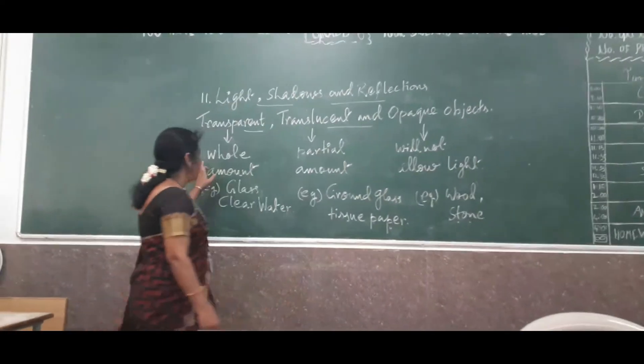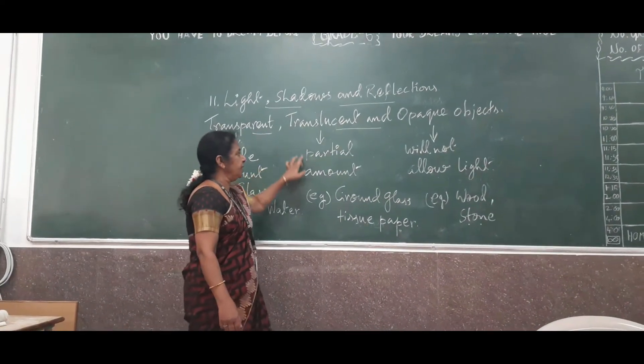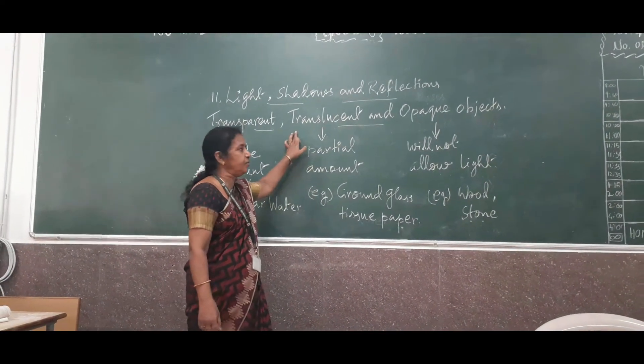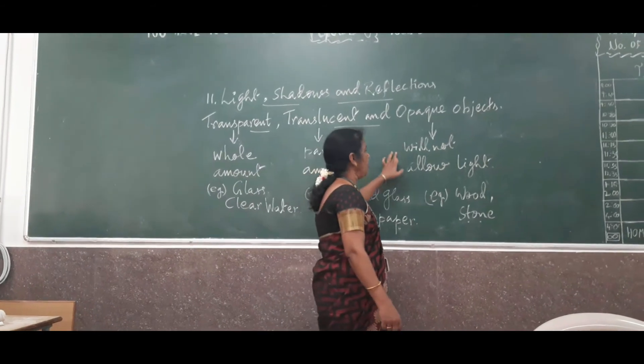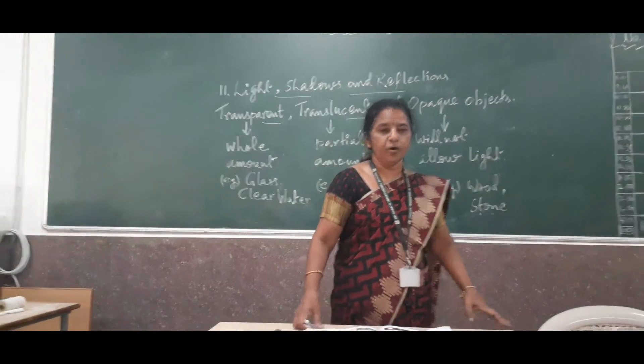In that basis, first we have seen, the whole amount of light is called as transparent. Second one is, partial amount is called as translucent. And third one is opaque object, that will not allow any light. That is called as opaque objects.